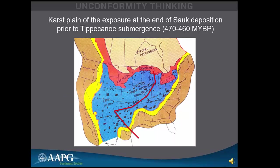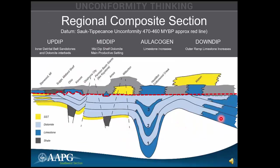This is the karst plane at the end of the Sauk deposition — equivalent to the 470 to 460 million year before present unconformity. I'm going to show a schematic cross-section from north to south, going from up-dip across the mid-continent and through the Oklahoma aulacogen down to the more distal ramp. The red dashed line represents the Sauk-Tippecanoe unconformity, and here's where the pays are.